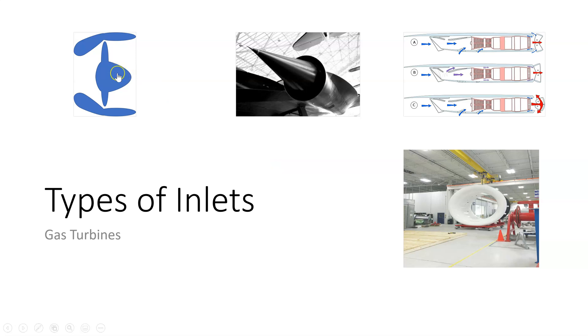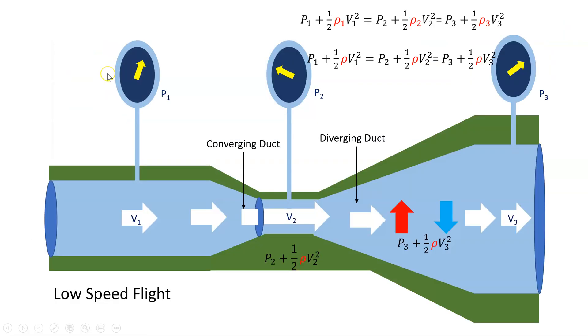The first one I'm going to look at is the subsonic inlet. If we just review quickly Bernoulli's theorem, we saw that for low speed subsonic flight, the density is generally constant as the air flows through the duct.